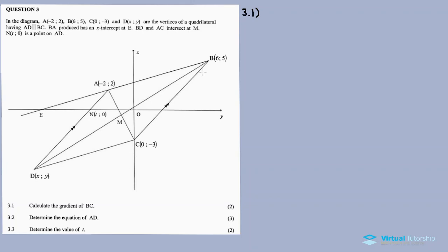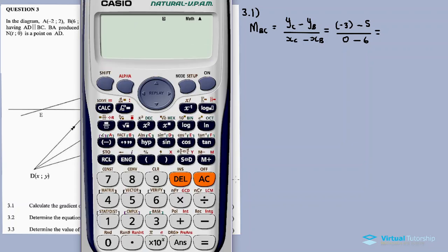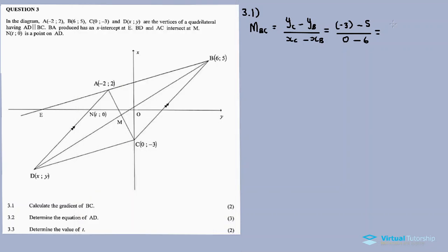3.1: Calculate the gradient of BC. The gradient of BC is equal to (yC − yB) over (xC − xB). Substituting: (−3 − 5) over (0 − 6), which gives negative 8 divided by negative 6, equal to 4 over 3. So the gradient of BC is 4/3.